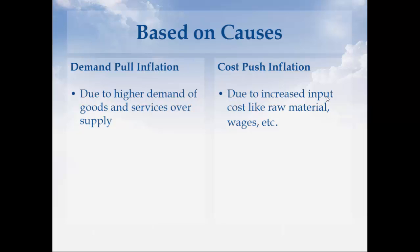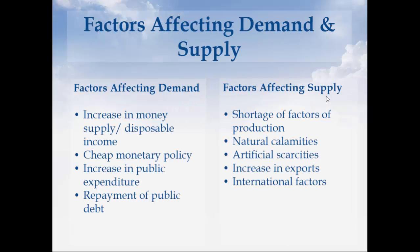Now let's look at inflation based on causes, which was not included in the flow chart. First is demand pull inflation, which as the name suggests is due to higher demand of goods and services over supply. Then there's cost push inflation, which is due to increased import costs like raw materials and wages. There are also factors that affect demand and factors that affect supply.